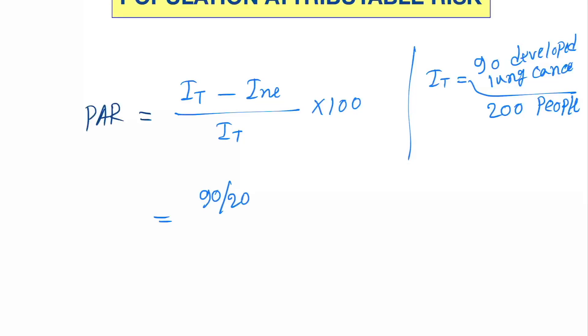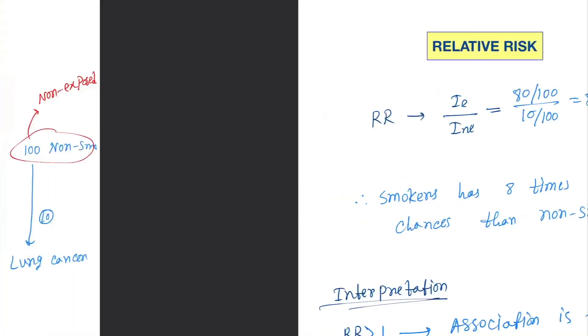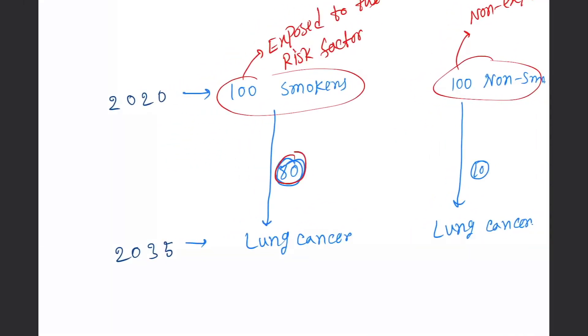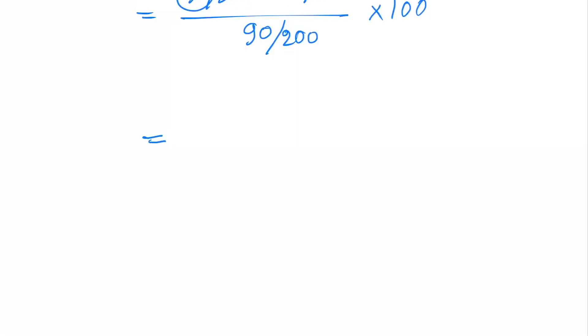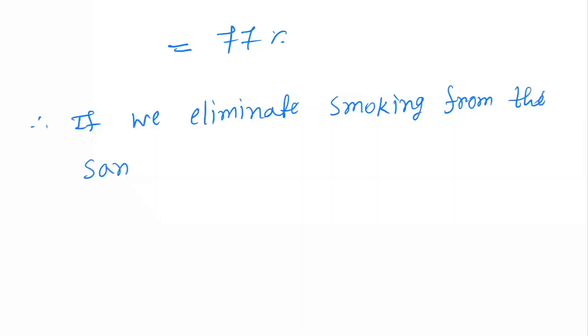So it will be (90/200 - 10/100) divided by (90/200) times 100. How did 90 come? You can see this is 80 here and 10 here, and total people 100 plus 100 equals 200. Here it is 80 and 10 equals 90. Now you can see that this is 77 percent. If we eliminate smoking from the same population,